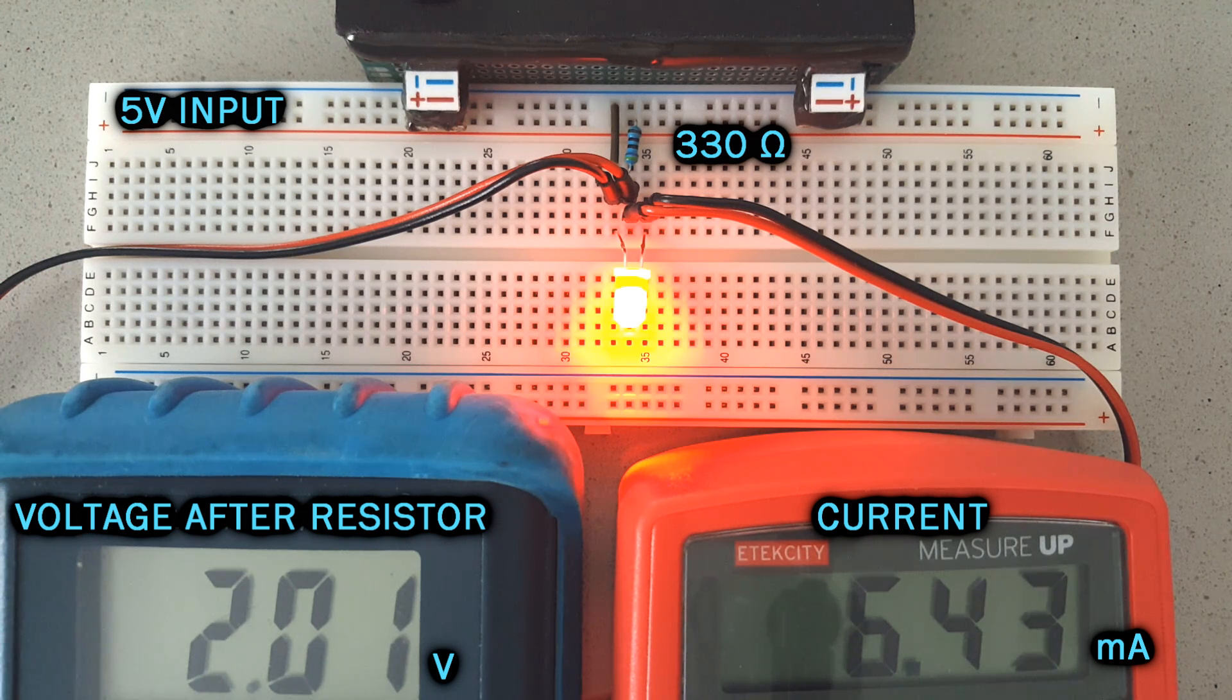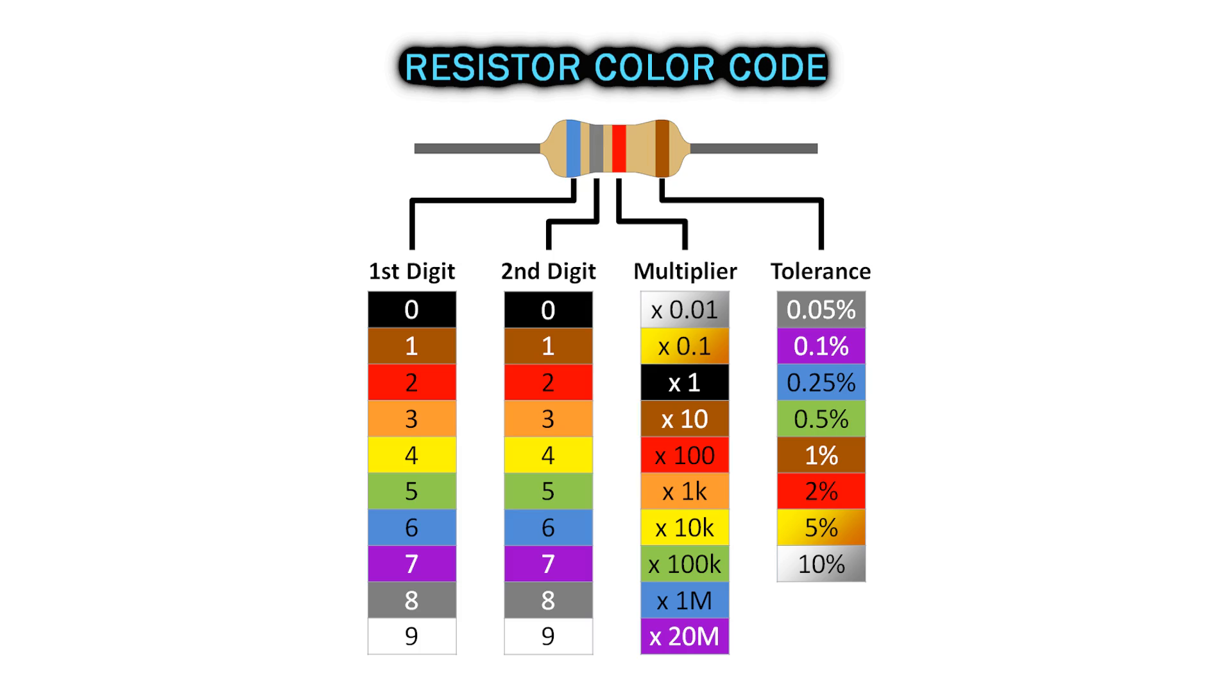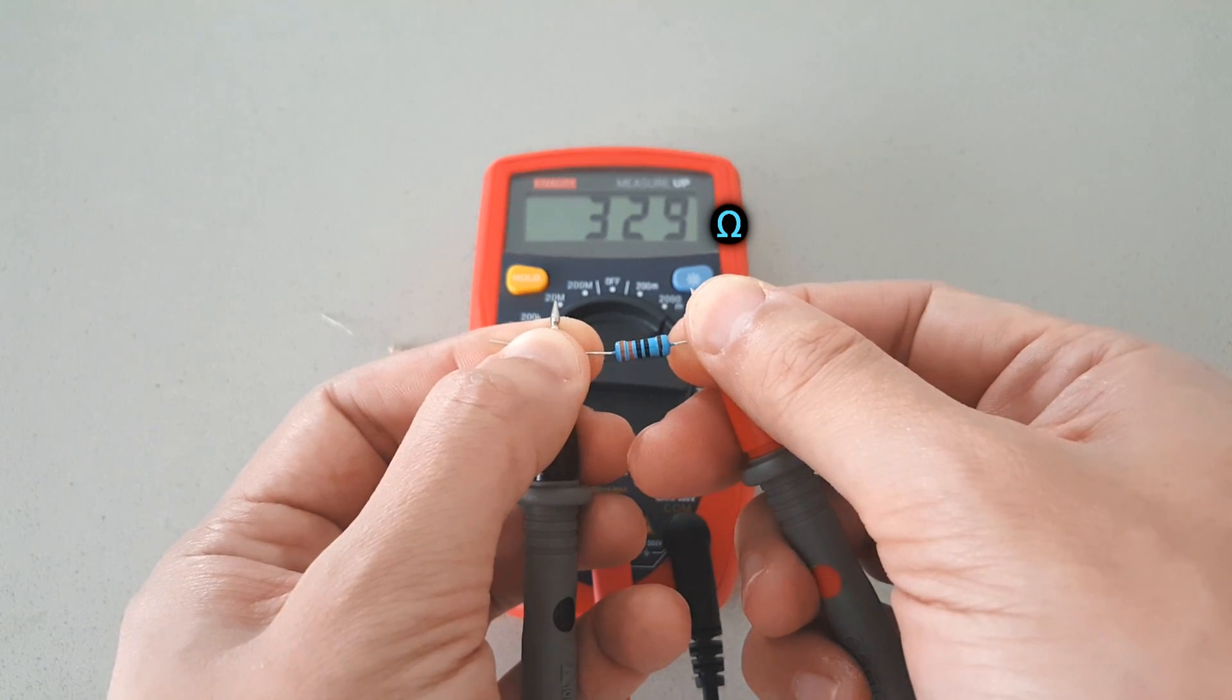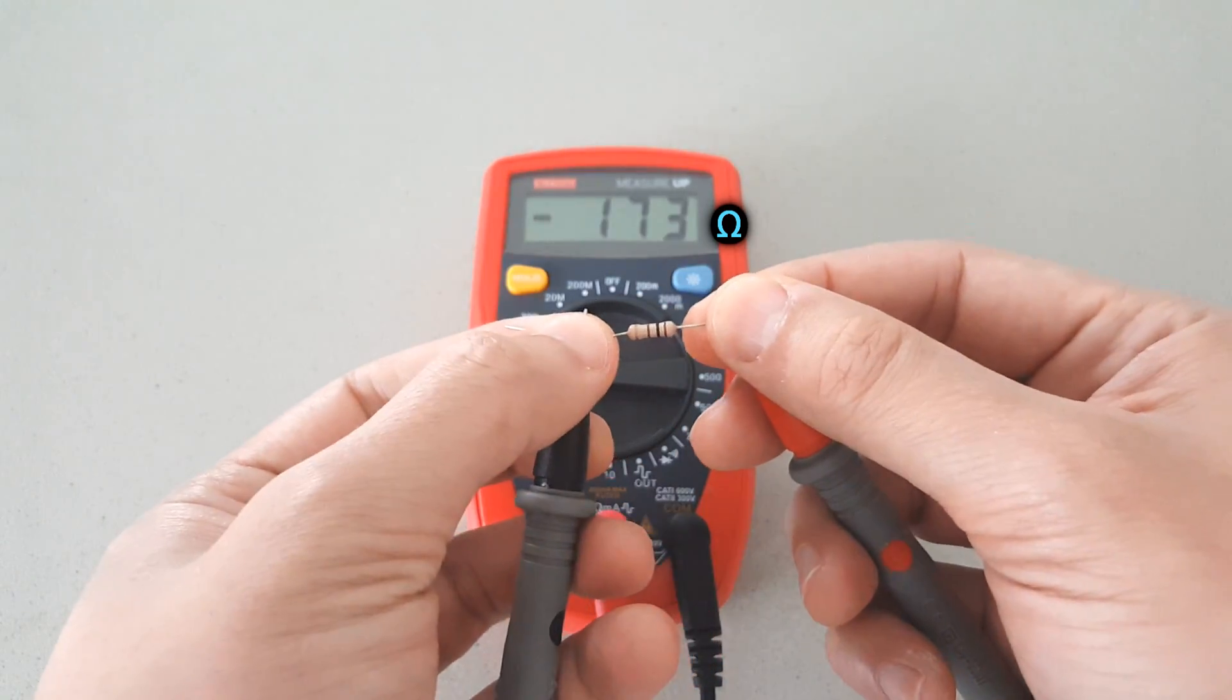With 5 volts, a common red LED should work fine with around 330 ohms, but it depends on the particular LED. The color bands indicate the value, but sometimes it's hard to read them, so I honestly prefer to just measure the resistance with a multimeter to make sure of its value.